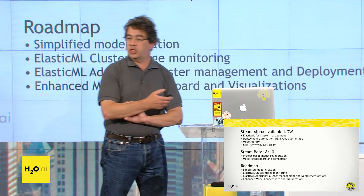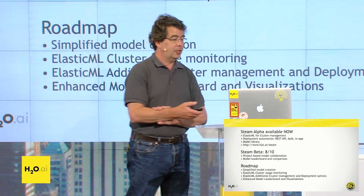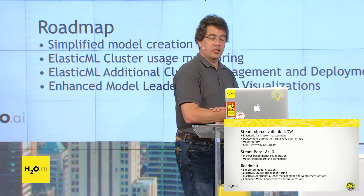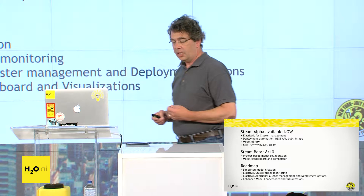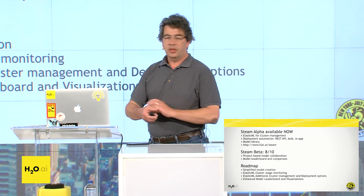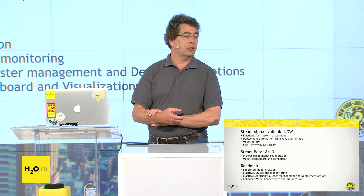Vinod mentioned the Steam pre-alpha — I prefer to call it the alpha. It's available right now and it has some features in it. We have a feature called Elastic ML, which is basically managing your H2O clusters. One of the things we've heard from many of our larger customers: I have 100 data scientists and I have this monster Hadoop cluster. I can deploy all these H2O clusters on it, but I don't want one data scientist interfering with another, stepping on their work. The cluster management is a very important part of Steam, and that's available in the alpha right now.